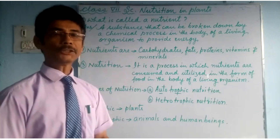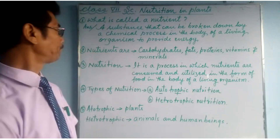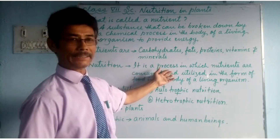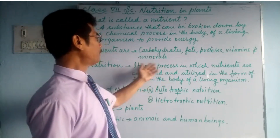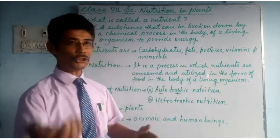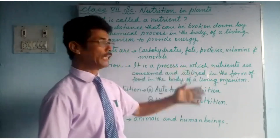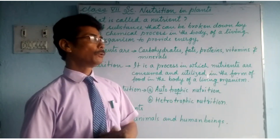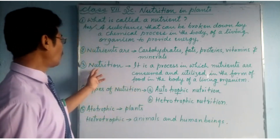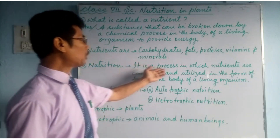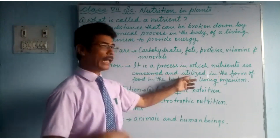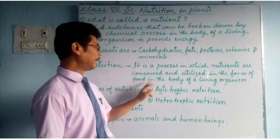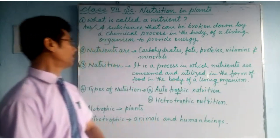Number 3: What is called nutrition? Nutrition is a process — process means ways, methods. It is a process in which nutrients are consumed and utilized in the body of a living organism to provide energy. That is called nutrition.